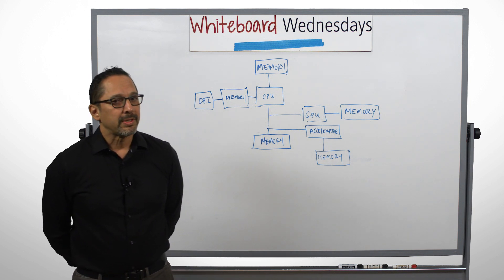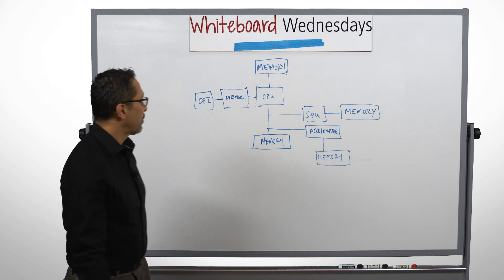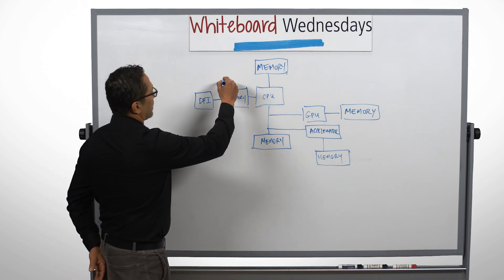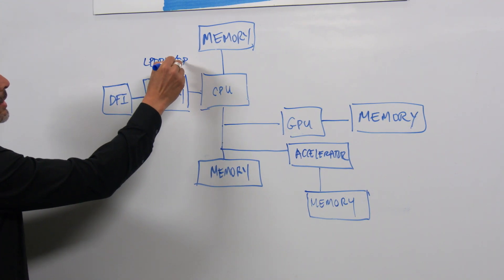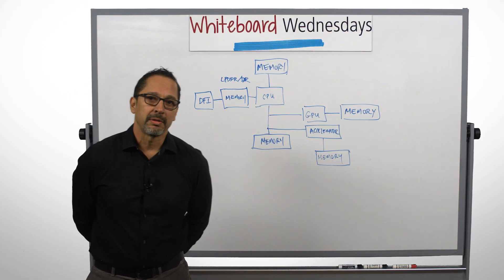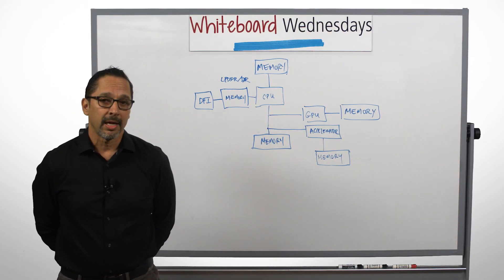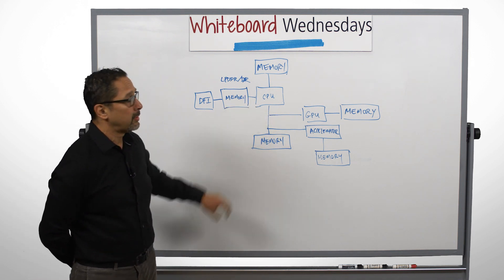The different memories that we're working with have different characteristics that help with that. For example, when you look at the GPU connection with LPDDR and DDR, these memories have a very good level of latency and also high capacity as far as the amount of memory you can use. This is very important for the CPU to do data caching.